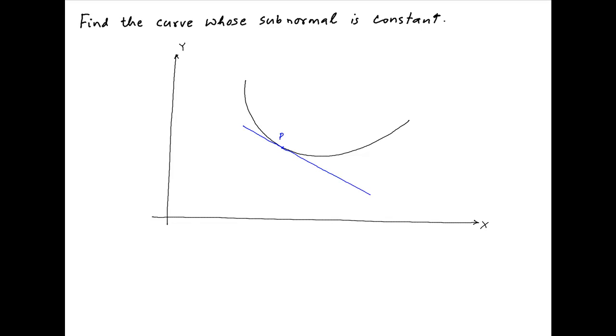The tangent to the curve at the point p, let's assume that it cuts the x-axis at the point t. The normal to the curve at the point p will be perpendicular to the tangent. And let's assume that it cuts the x-axis at the point n.